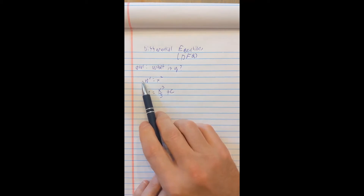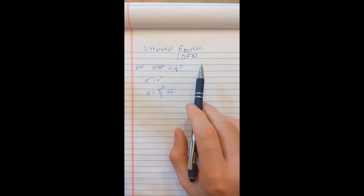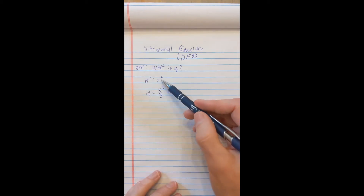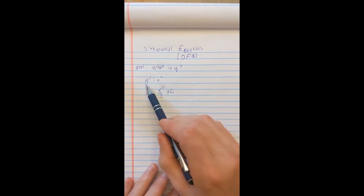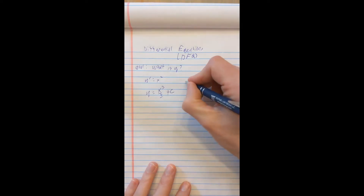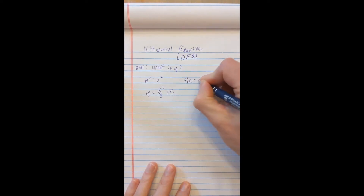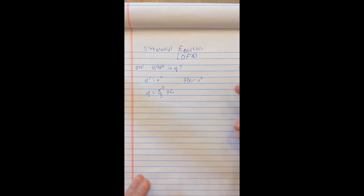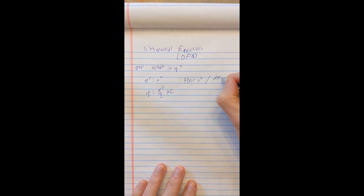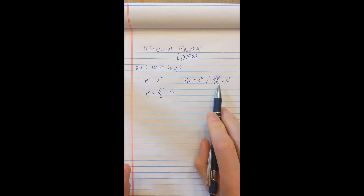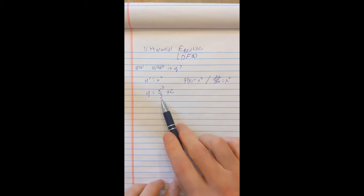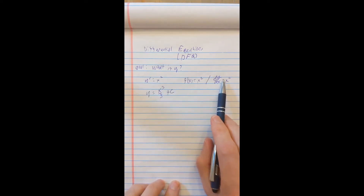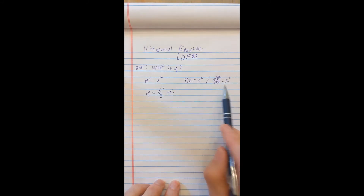Why is this called a differential equation? It's called a differential equation because math people aren't creative — it's an equation with a derivative in it. When you solve it, you actually figure out what y is. There are a few other ways I could ask that exact same question: f prime of x equals x squared, or dy/dx equals x squared. All three of these are the exact same problem. Today I'm going to focus on the dy/dx form.